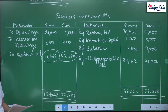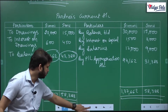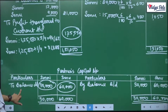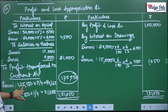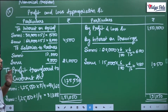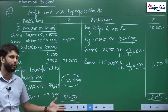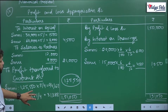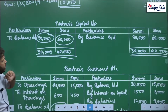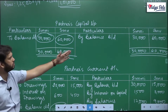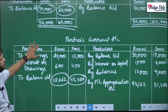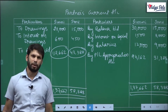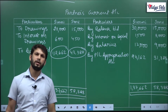With this our question number 10 is done. A simple question, and you can expect such questions also in your board exam. Board exams are not always very difficult. So this is our P&L appropriation. This is the profit which we have transferred to the current account. In the capital account there were no transactions at all, so whatever was the balance brought down was the balance carried down. In the current account we put all the entries and this becomes our closing balance. We will do question number 11 in our next lecture. Thank you.